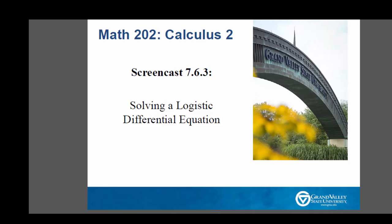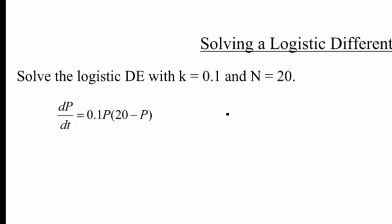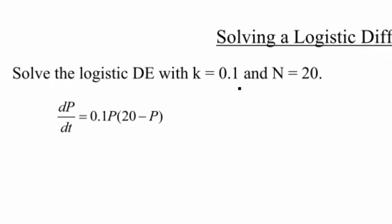Hello, and welcome to a screencast about solving a logistic differential equation. In the last video where we set up this logistic equation, we ended up with a value of k equals 0.1 and N equals 20. So that leads us to the differential equation dp/dt equals 0.1p times 20 minus p.